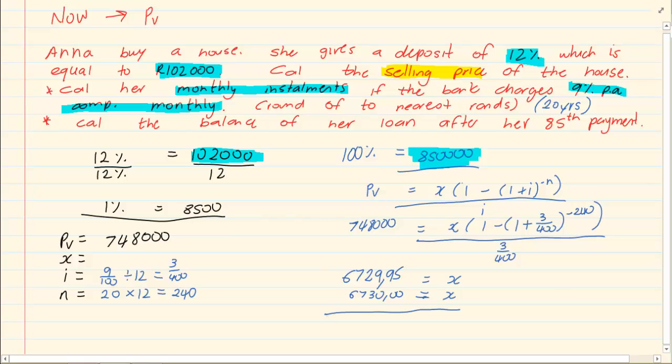Look at what is the next question. Calculate the balance of the loan after her 85th payment. If I am paying something and so many years passed and then I go to the bank and I say I want the balance of the loan. When I go to the bank, I am going right now. And that's what you must remember. When you are doing balance, you are going to the bank now. And if you are going to the bank now, then it means we are doing present value.